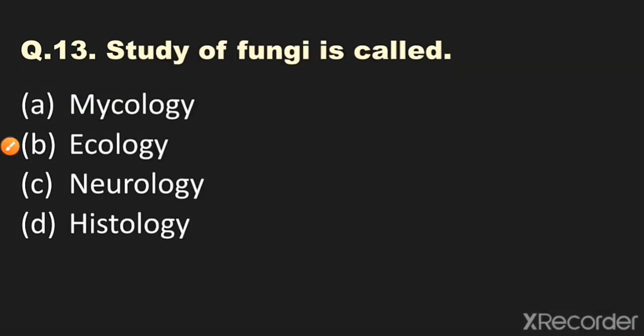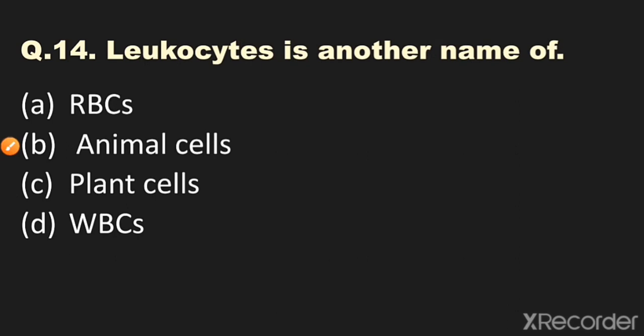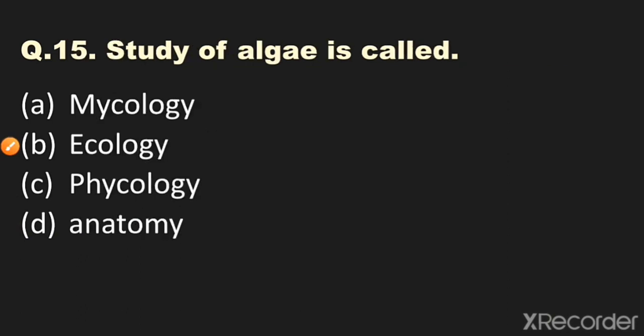Question number thirteen: The study of fungi is called? Options: A) mycology, B) ecology, C) neurology, D) histology. The answer is option A — the study of fungi is called mycology. Question number fourteen: Leukocytes is another name of? Options: A) RBCs, B) animal cells, C) plant cells, D) WBCs. The answer is WBCs — white blood cells are called leukocytes.